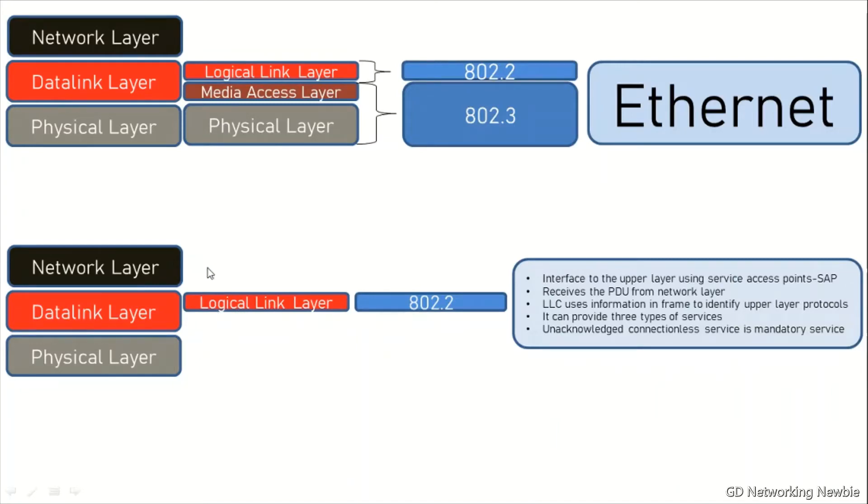This logical link layer receives the PDU from the network layer and also adds some information to identify which network protocol is going to use these layers - maybe TCP/IP, maybe IPX/SPX. It can offer three types of services: unacknowledged connectionless and connection-led services, with the mandatory service out of those three services.